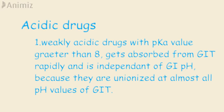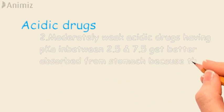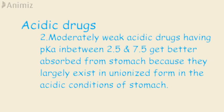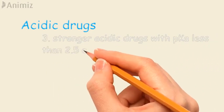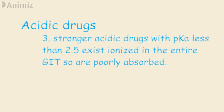Moderately weak acidic drugs with pKa between 2.5 and 7.5 show pH-dependent absorption in the GIT. Such drugs largely exist in unionized form in the acidic conditions of the stomach, so they get better absorbed from the stomach. Stronger acidic drugs with pKa less than 2.5 are very poorly absorbed, as they are ionized across the entire pH range of the GIT.